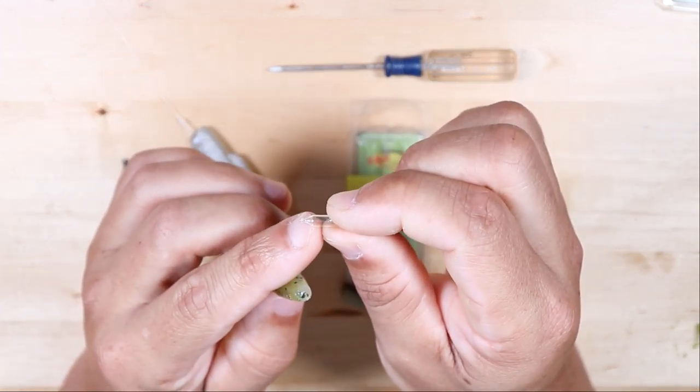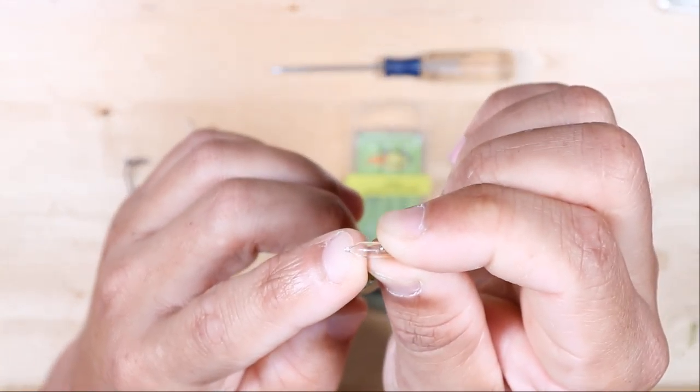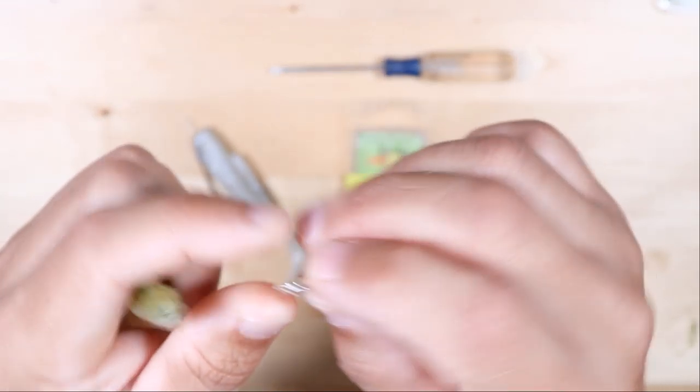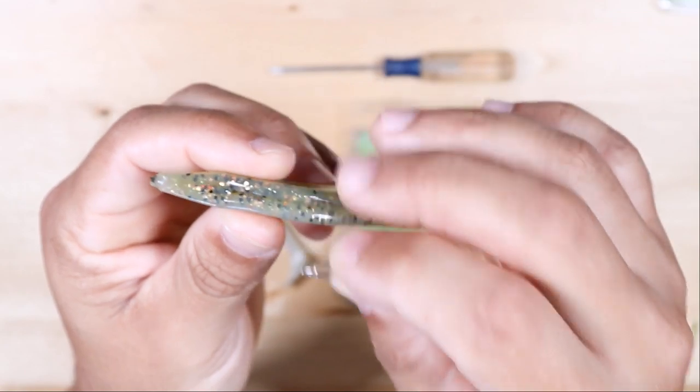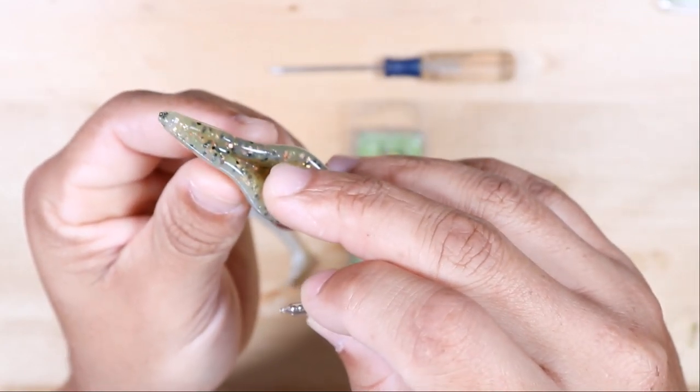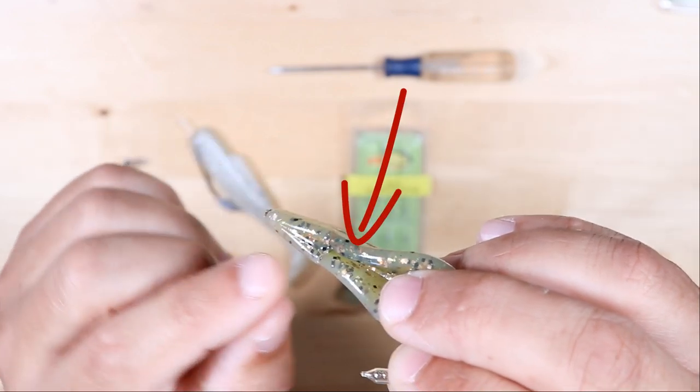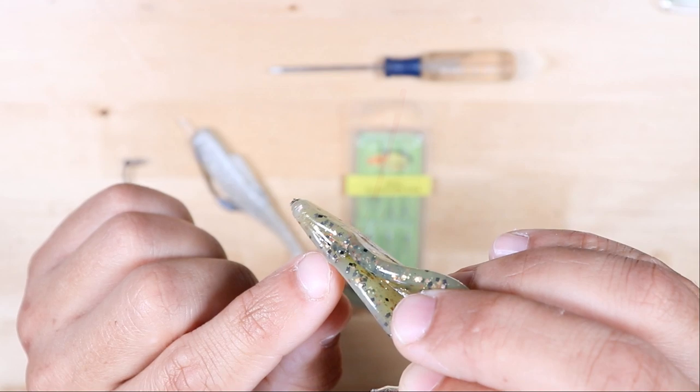You can see one side of the rattle has sort of a pointy end, and then the other side is just round. That pointy end is the end you want to put into your bait first. On these jerk bait style lures, I like to go through the bottom of the lure near the base of the head. That's a really meaty area, also your hook doesn't get in the way too much there.